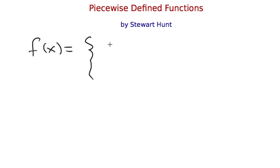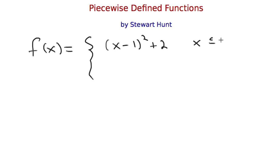Here is f of x, and I'm going to have two pieces to this one. The first piece is x minus 1 squared plus 2, and that's for values of x less than or equal to 2. The second piece is minus x minus 3, and that's valid for values of x greater than 2. We say it's a piecewise defined function because the algebraic definition of the function changes depending on the value of x.